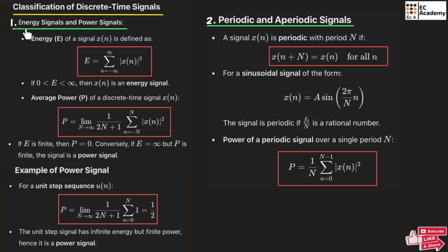The first type of signal is the energy signal and power signal. We will find the energy of a signal using the formula: E is equal to summation of n from minus infinity to infinity of the magnitude of x of n, squared. This is the formula we use to find the energy of the signal. If energy is between the range 0 to infinity, then x of n is an energy signal.